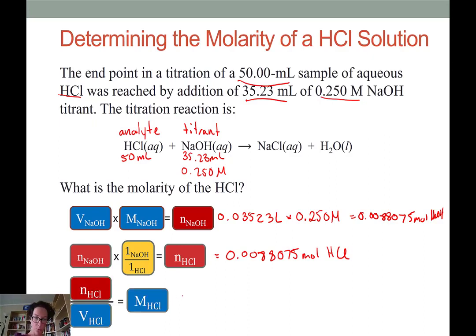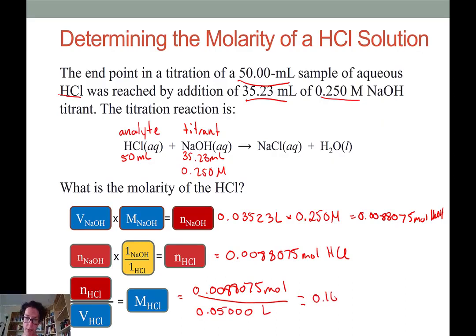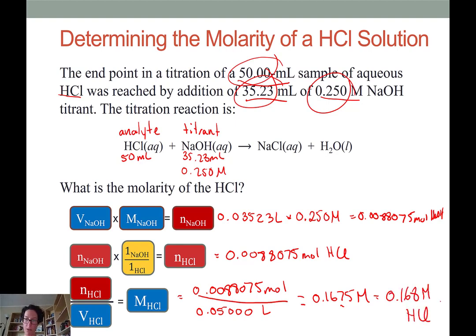Last step, we're going to take that number of moles and divide it by the volume, again, doing that quick mental math to convert between liters and milliliters and keeping in all of our sig figs, and we come to the answer of 0.1675 molar. Checking with our significant figures, we have 4, 4, 3, so we're going to round to the third decimal. So 0.168 molar HCl was the concentration of that unknown hydrochloric acid solution.